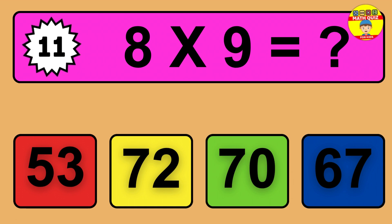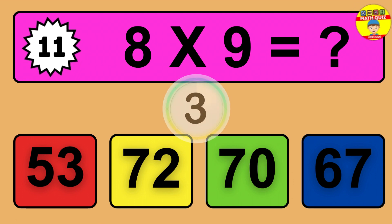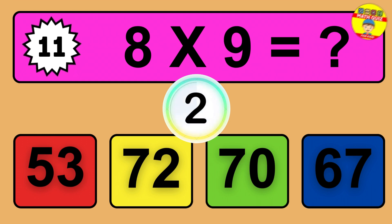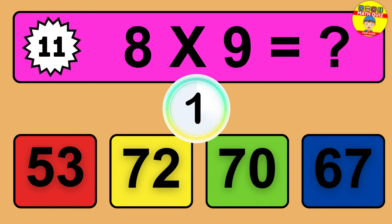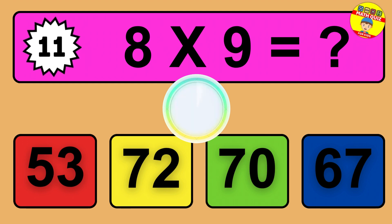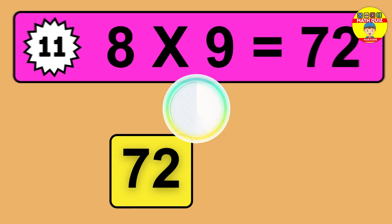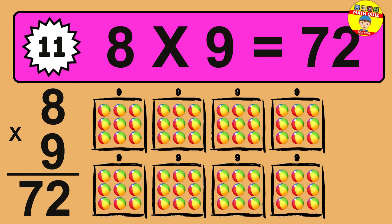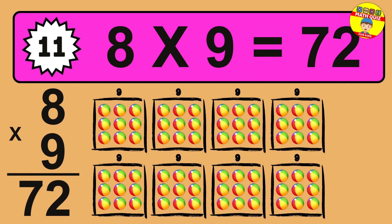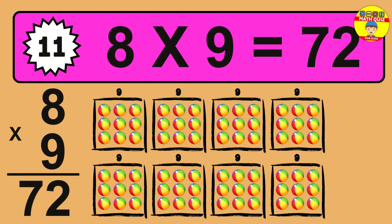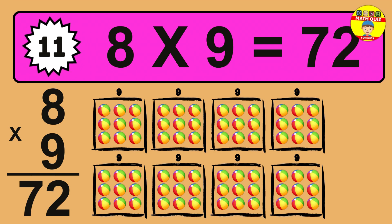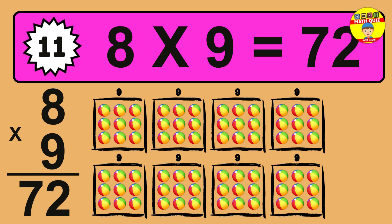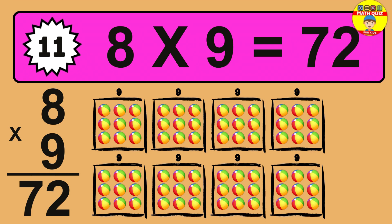Question 11. 8 times 9 equals what? The answer is 8 times 9 is 72. To calculate, we have 8 groups with 9 balls each one. So how many balls do we have? 72 balls.